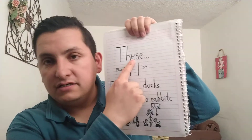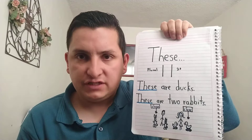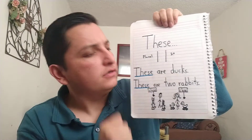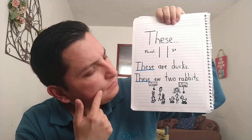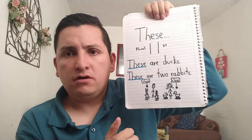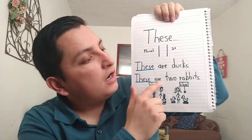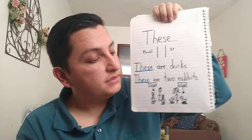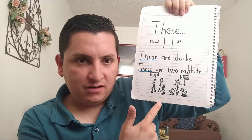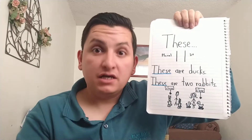'These' is when we have two or more objects. For example: these are dogs — where are the dogs? Here are the dogs, close to the girl. Now, these are two rabbits — where are the rabbits? Right here, close to the boy. Yes, close. Do you remember 'close'? Now let's check the other one.